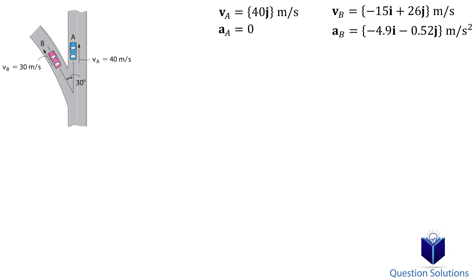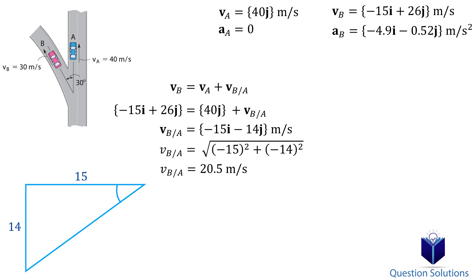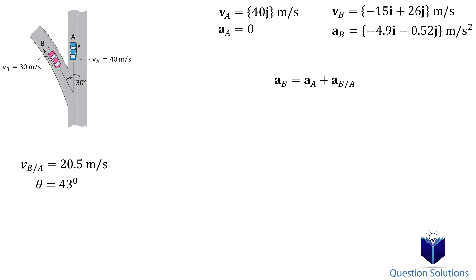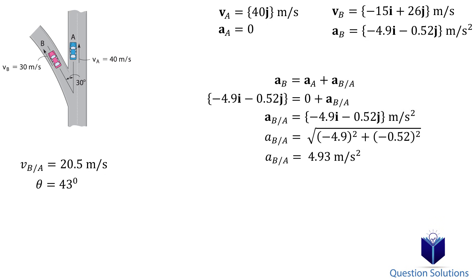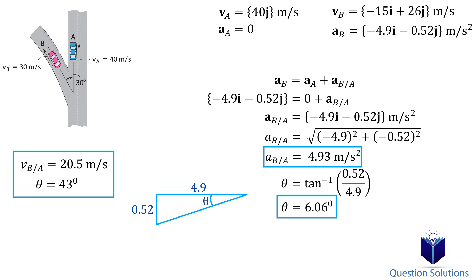Let's start off with velocity. The question says we need to find the velocity of car B with respect to car A, so our equation looks like this. Let's plug in what we found and solve. Now we calculate the magnitude, and the angle can be found using tan inverse. For acceleration, we use the relative acceleration equation, plug in what we know, and solve. Now we can find the magnitude, and the angle can be found using tan inverse. Those are our answers. That pretty much covers the problems you will face in this chapter. If this video helped you, please give a thumbs up. Thanks for watching and best of luck with your studies.